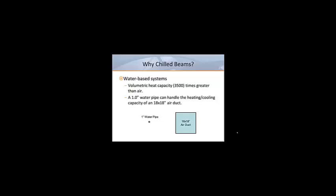We already know how to condition spaces with central air handlers and overhead diffusers, so what makes a chilled beam so interesting? Well, it mainly comes down to water. Although a conventional system uses air to transport heating and or cooling to a space, a chilled beam system handles the heating and or cooling requirements with water instead.